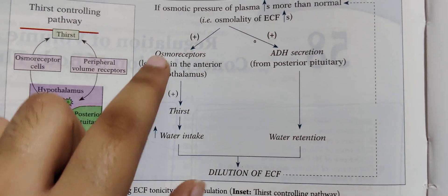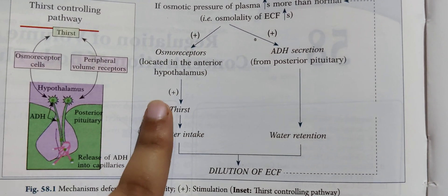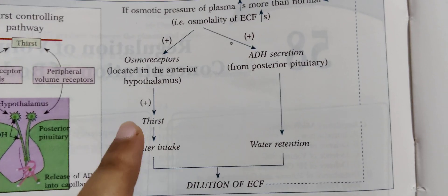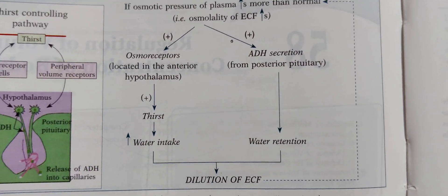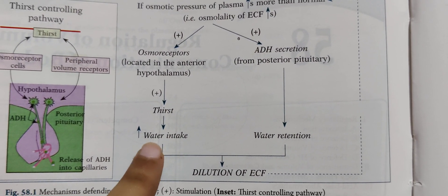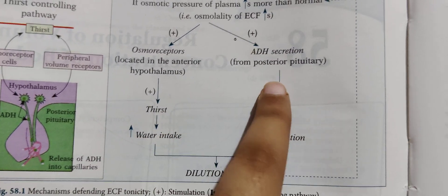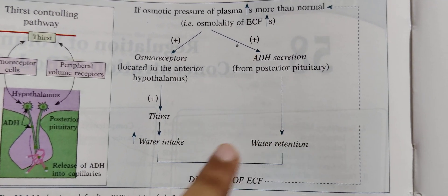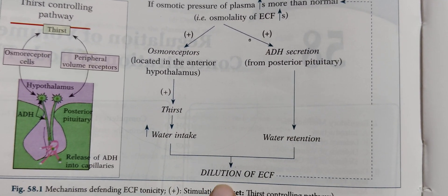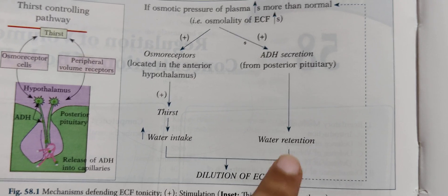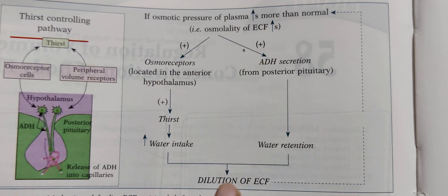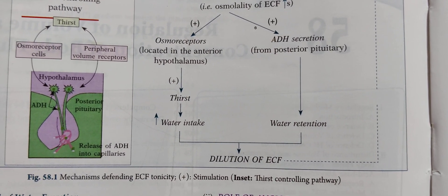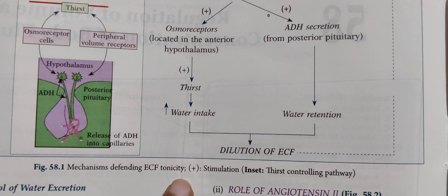So what will the osmoreceptors do? They will increase thirst. The increase in thirst will increase water intake, and ADH will lead to water retention. Both of these together will lead to dilution of ECF, which solves the problem. This was the mechanism defending ECF tonicity.